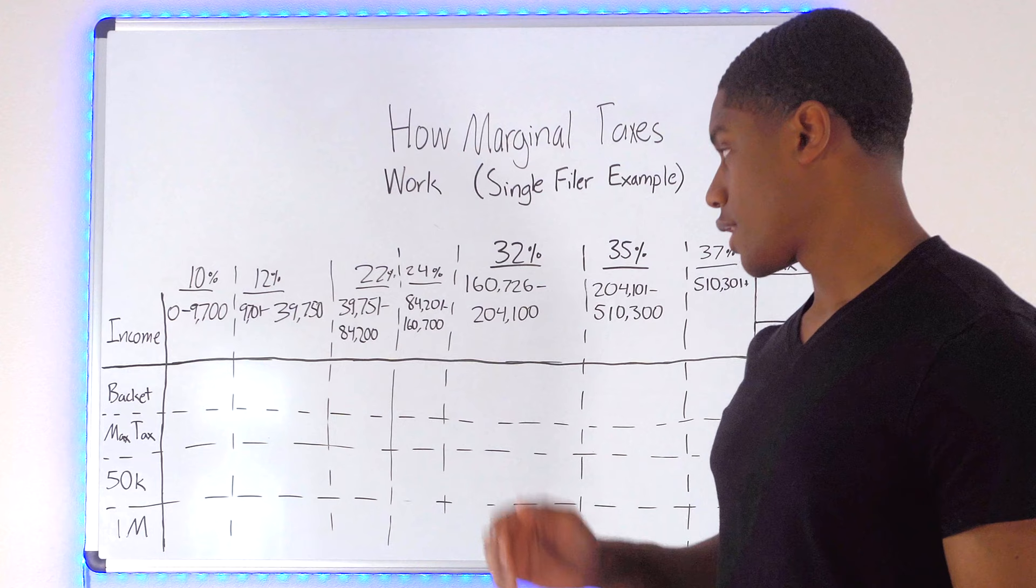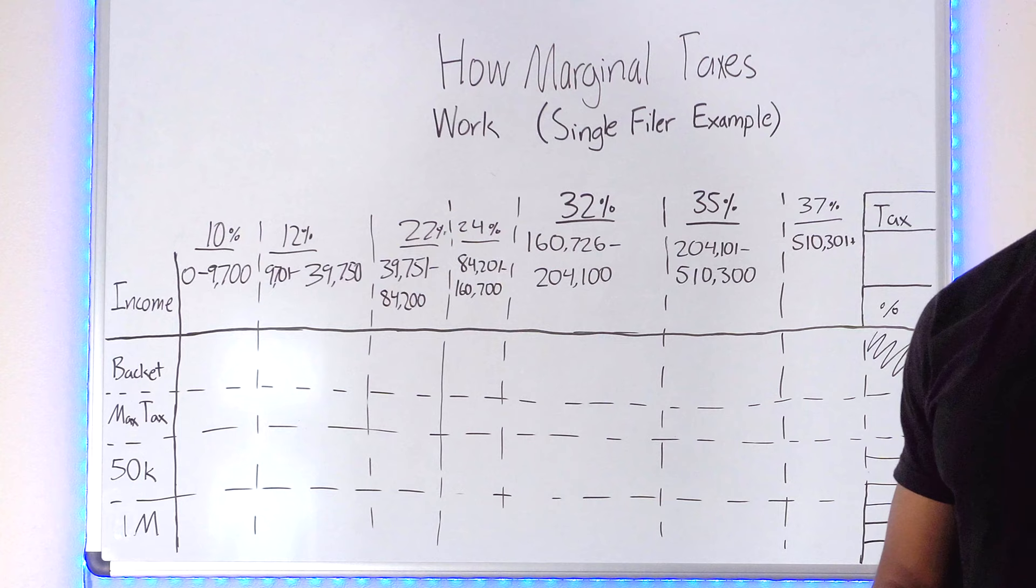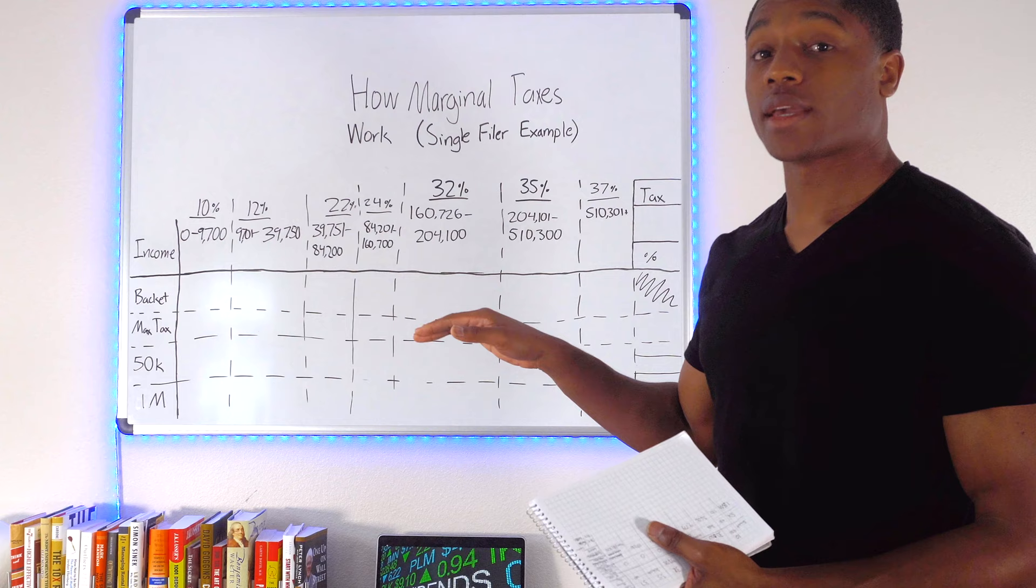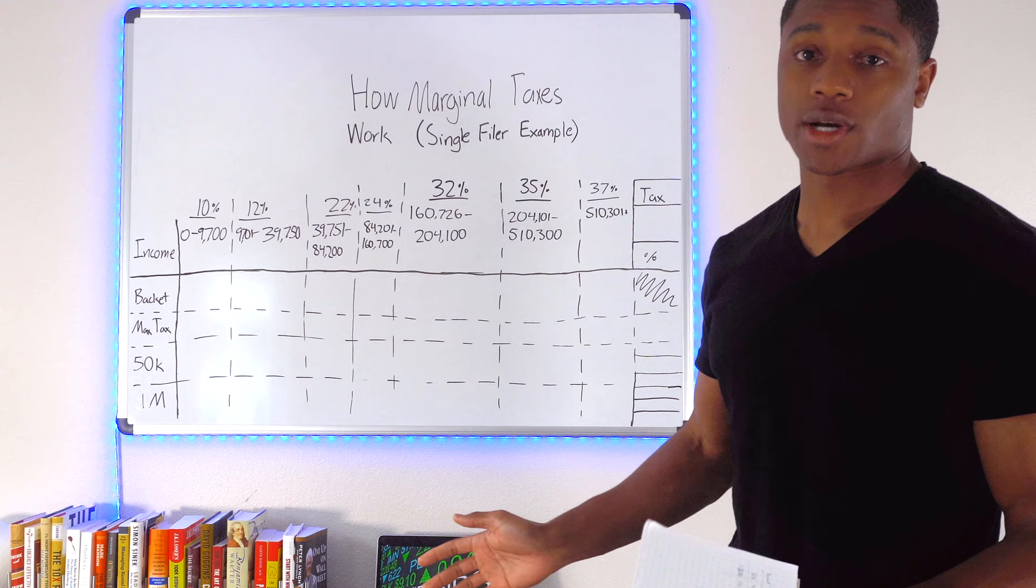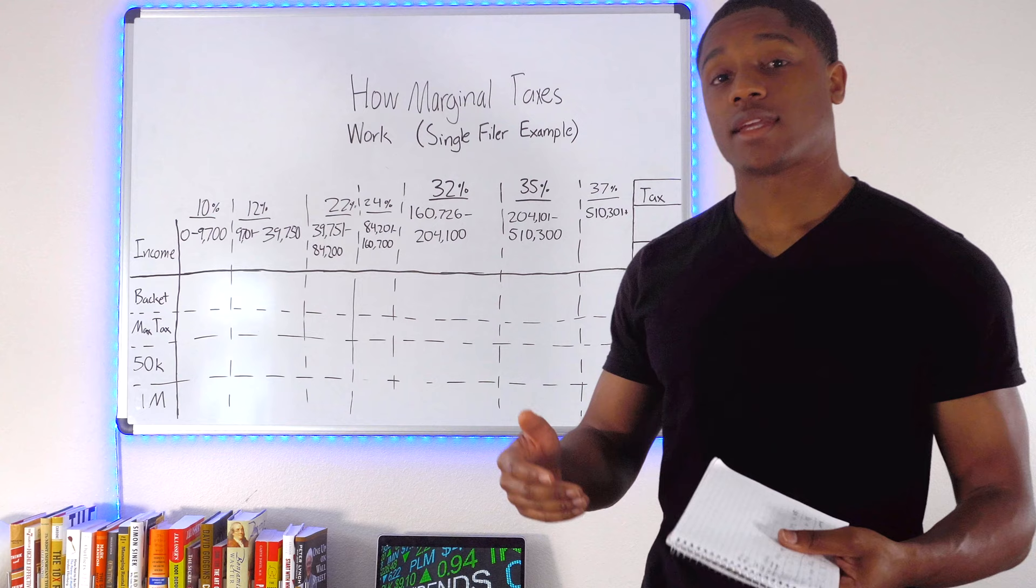We've got five categories over here. We've got income bracket, max tax, 50k, 1 million. So we're going to do the income brackets, how much you're paying out of each of those brackets, what's the maximum that you can pay for each bracket, and we're going through two examples, somebody making 50k and somebody making a million dollars.